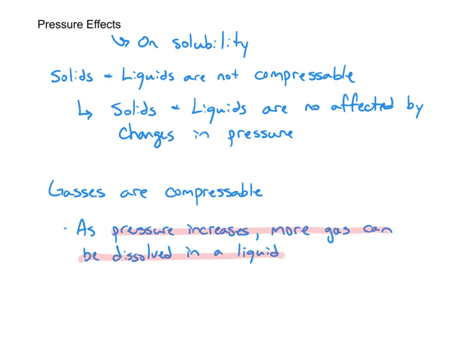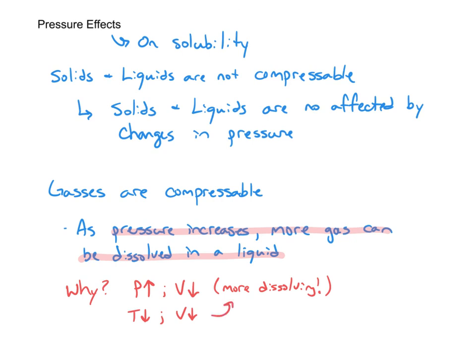In summary, pressure has no effect on solids and liquids, but has a very large effect on gases. Under high pressure, more gas can be dissolved into liquid. Using gas laws: under high pressure, volume is low, so gas bubbles get smaller and can fit into smaller spaces between solvent particles. Combine that with low temperature — which also reduces gas volume — and you get very high solubility of gases in a liquid. That takes care of this video lesson. Thanks for watching.